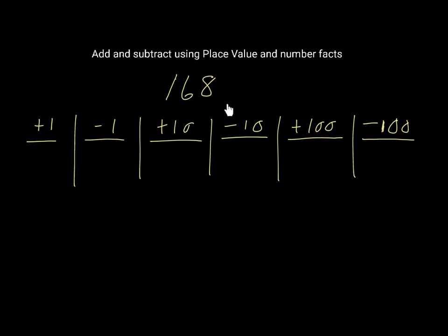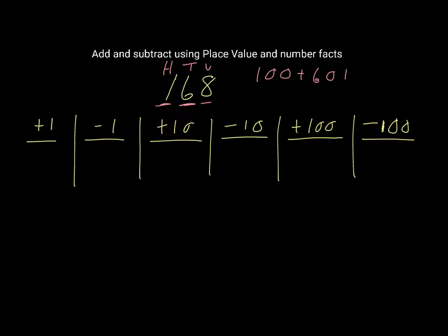So we have 168 here, and I'm going to go through what happens when you add 1 and subtract 1, add 10, subtract 10, add 100, subtract 100. The 8 is in the units column, the 6 is in the 10s column, and the 1 is in the 100s column. So this is actually 8 units, 60, and 100. If we were to rewrite it, it would be 100 plus 60 plus 8.